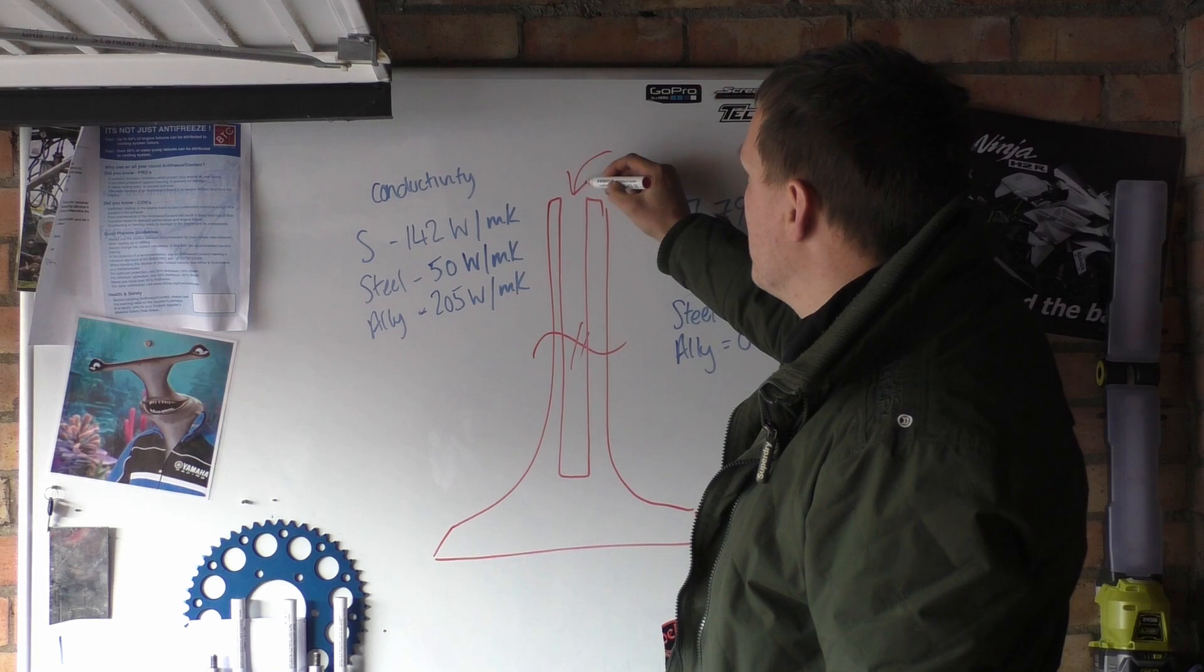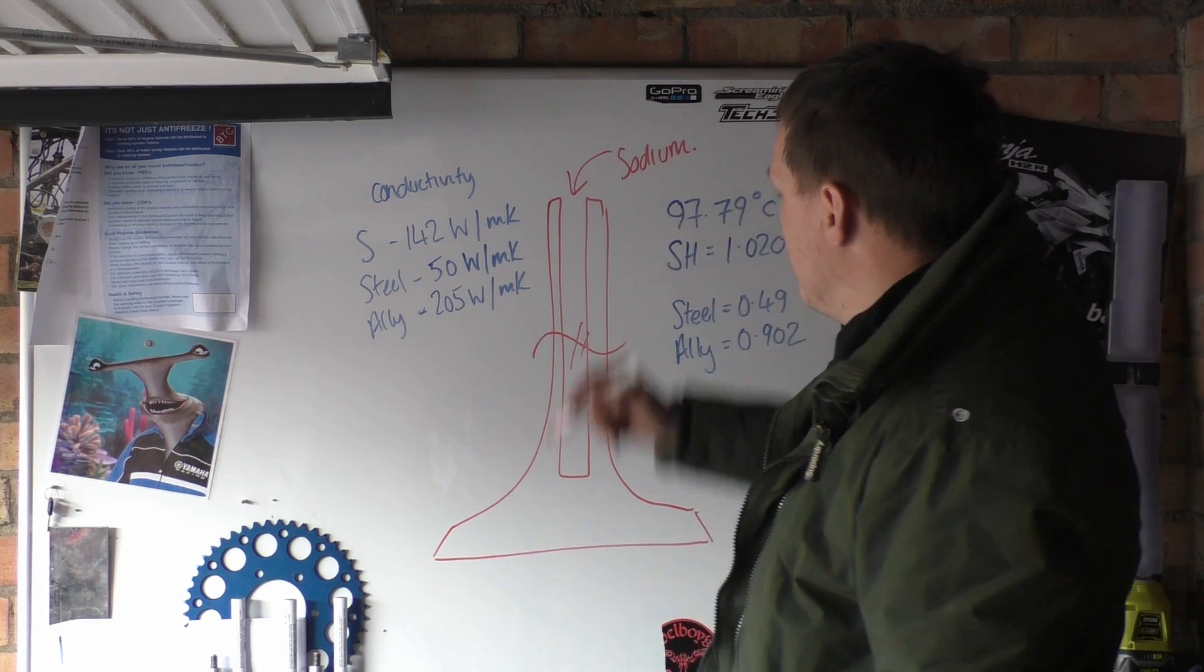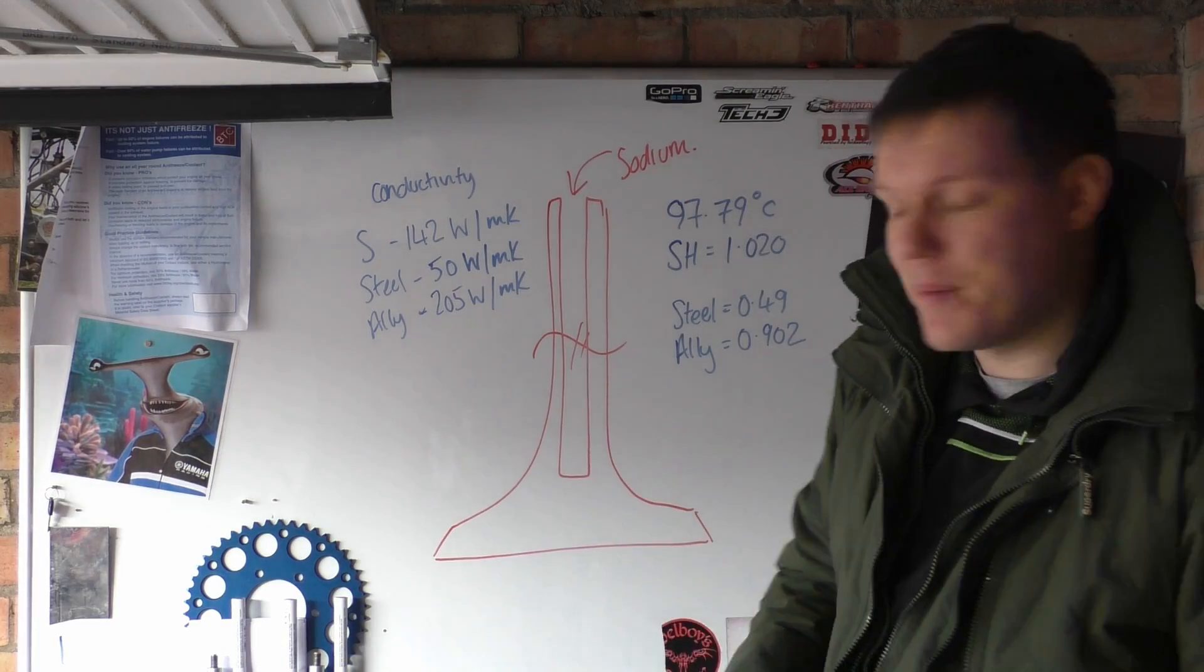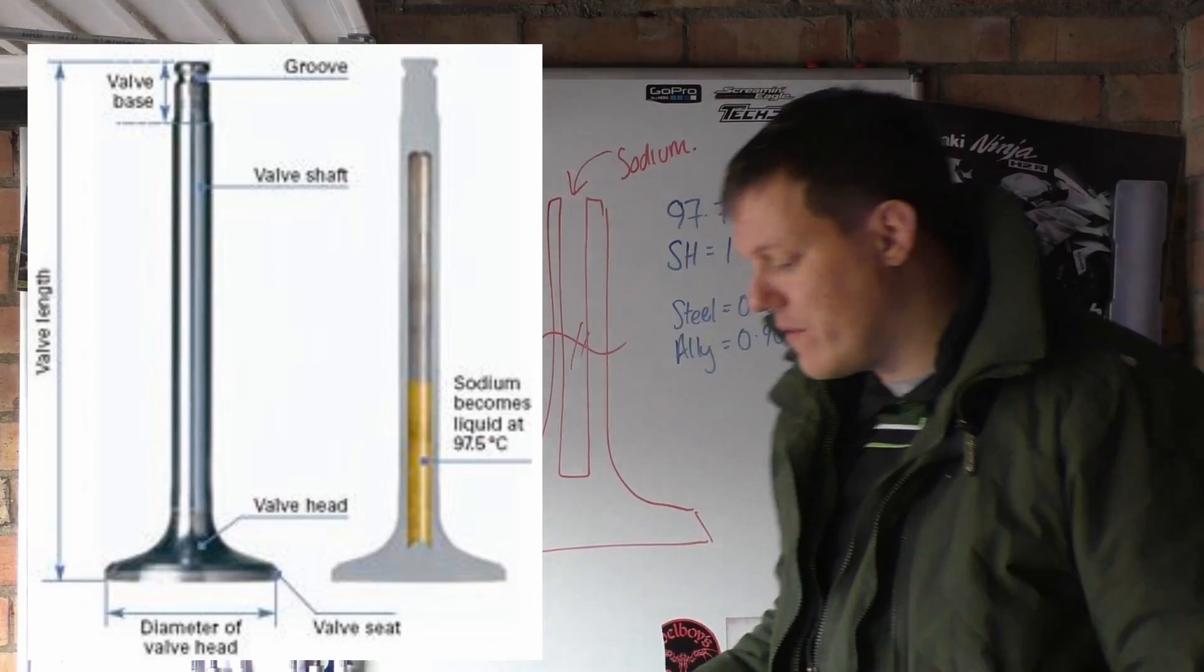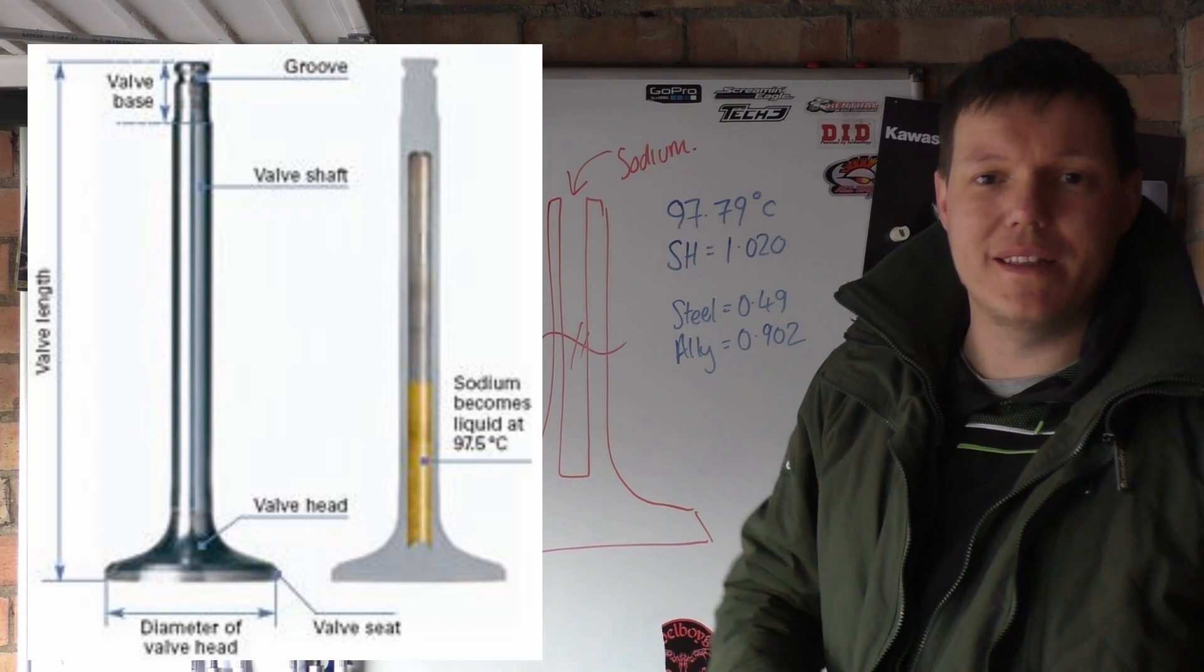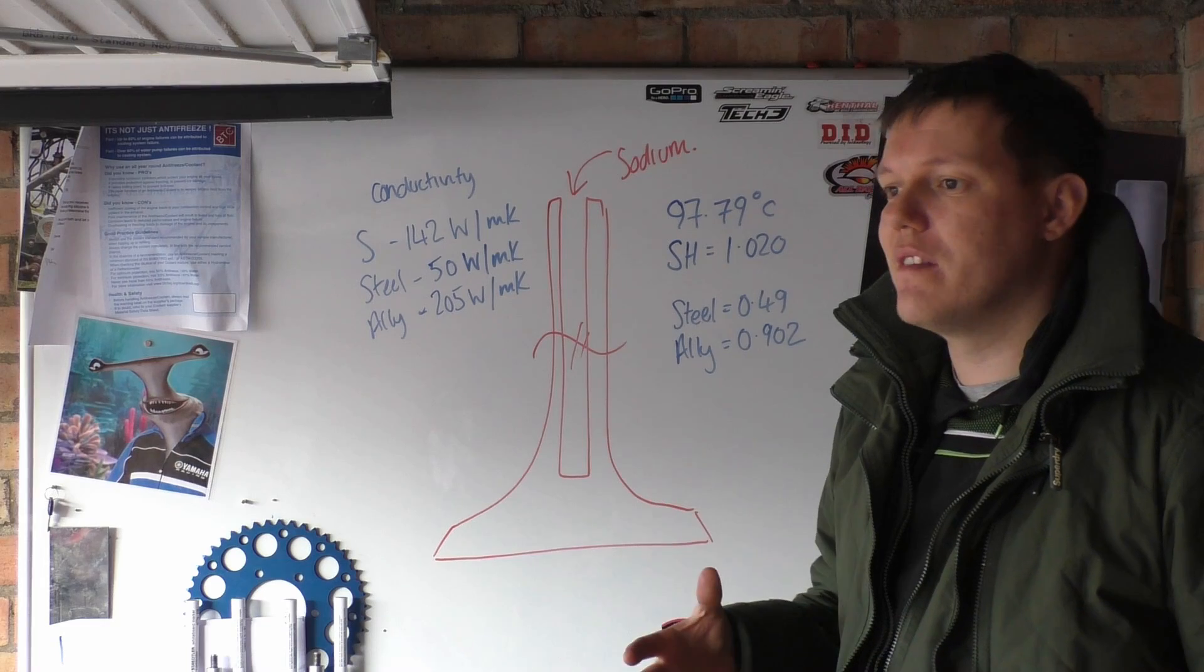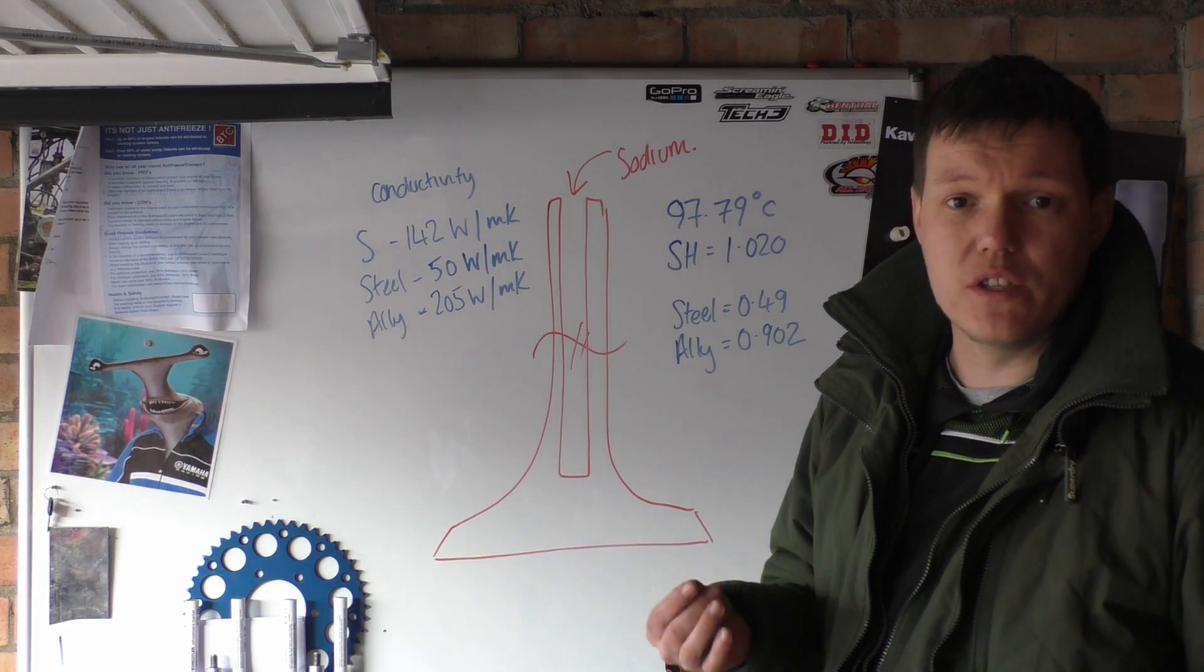They put sodium in the valve and then they have a cap and they cap it off. Why do this? This is a thing that they used to use in aviation - that's pretty much where it started. This was because back in the day the material technology wasn't as good, so the steels weren't as good.